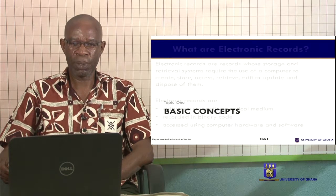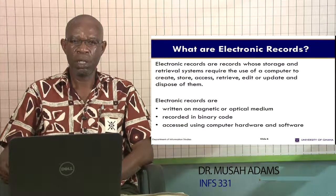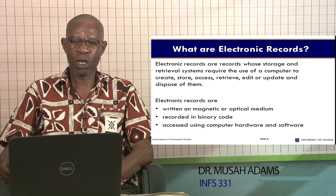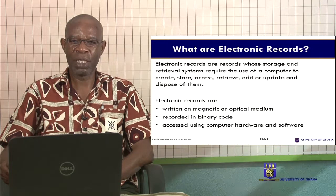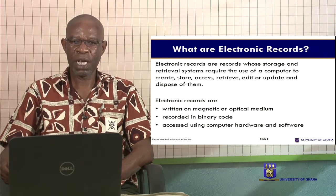So we look at basic concepts. What are electronic records? We normally refer to electronic records as records whose storage and retrieval system require the use of a computer to create, store, access, retrieve, edit or update and dispose of them. We normally talk about electronic records as machine dependent, as compared to paper-based records. Electronic records are written on magnetic or optical medium.